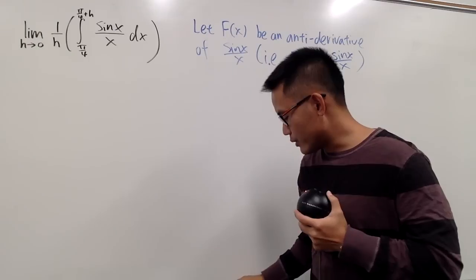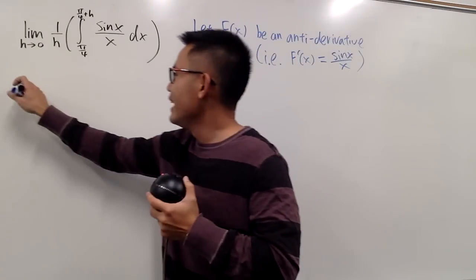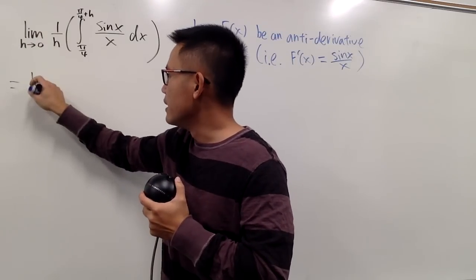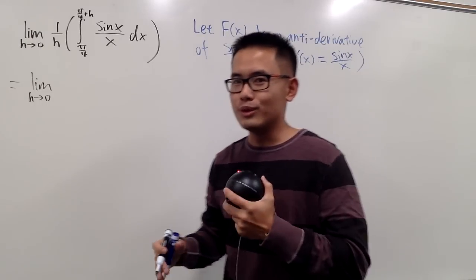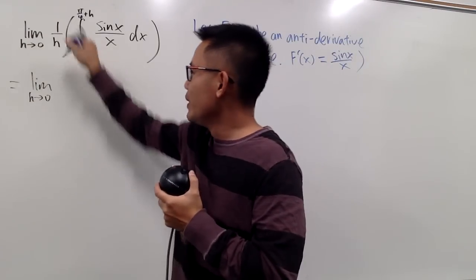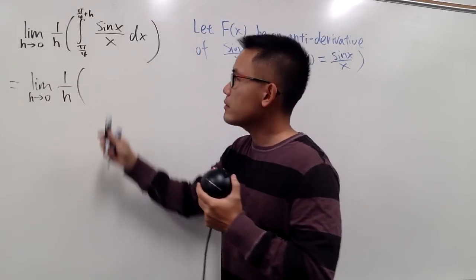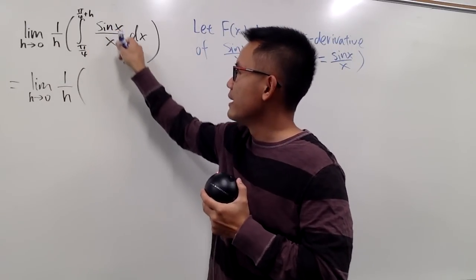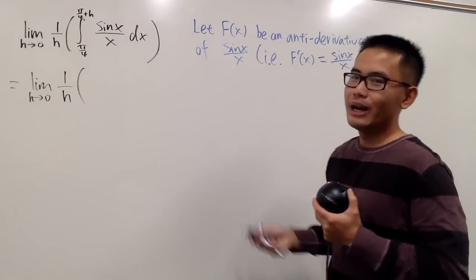Here is the deal. We'll just continue this in black and blue. We'll write this down. Here we have the limit as h goes to 0. And by the way, if you're about to use L'Hôpital's rule, just don't do that. Just wait for it. We have 1 over h.